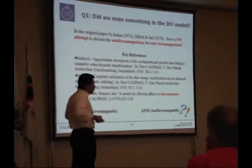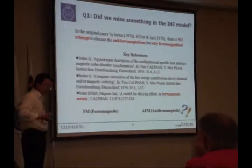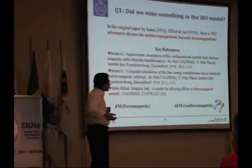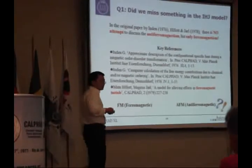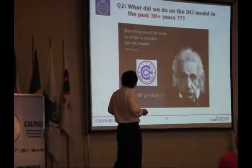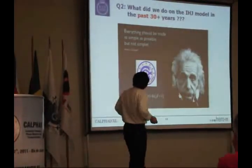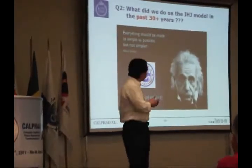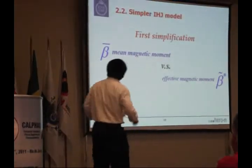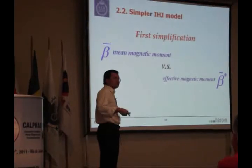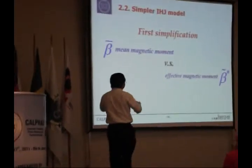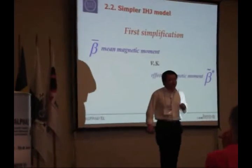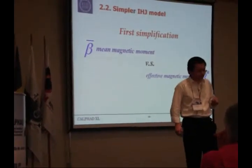If you check the original publication from Hillert and Inden, here and here, you will find they never try to discuss antiferromagnetism. So you will ask yourself, do we need something in this model? Yes or not? Of course. Then you will see what did we do in the last 30 years using this simple IHJ model? This is a simplification. The first simplification is that we stick onto this average magnetic moment, but never try to calculate effective magnetic moment or use local magnetic moment. This is wrong, of course.